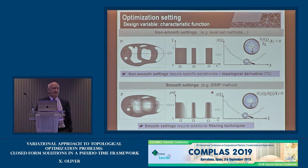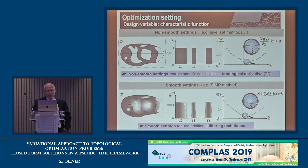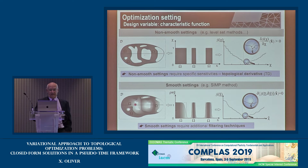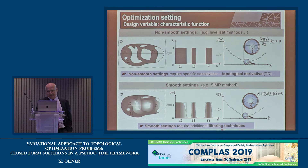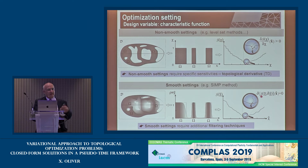The bad news is that the non-smooth character of the design variable poses strong mathematical problems for standard variational and minimization methods. One successful approach — perhaps the most used — is the SIMP method, which overcomes this by smoothing the characteristic function into a pseudo-material density ranging from 0 to 1. The resulting designs are not just black and white but have gray regions, requiring additional filtering techniques. The advantage is that standard variational methods such as Gâteaux derivatives and directional derivatives can then be applied.